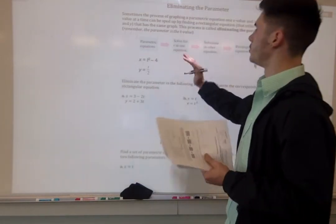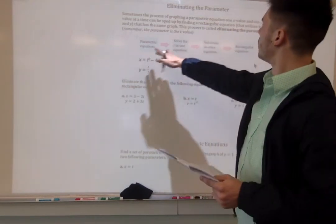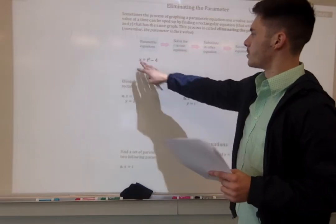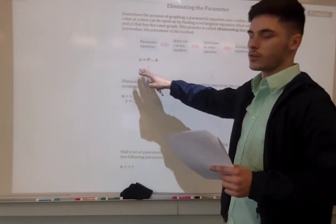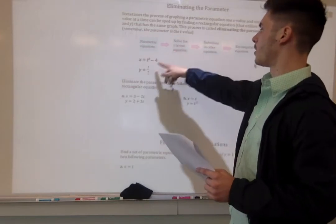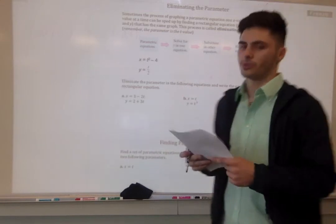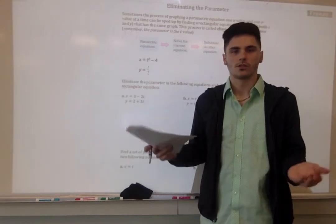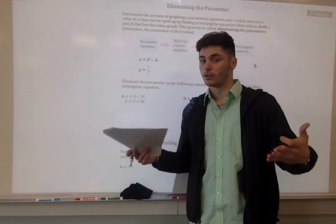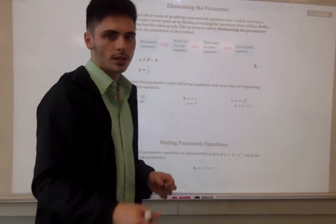What we're going to do to turn this into a rectangular equation is solve for t in one equation. Here's our parametric equations with our parameter t. We're going to solve for our parameter t in one equation, and we're going to substitute into another equation. That will give us the rectangular equation. This is just like solving systems of equations. It's almost like there was a reason that we learned that stuff, because it helps in the future.